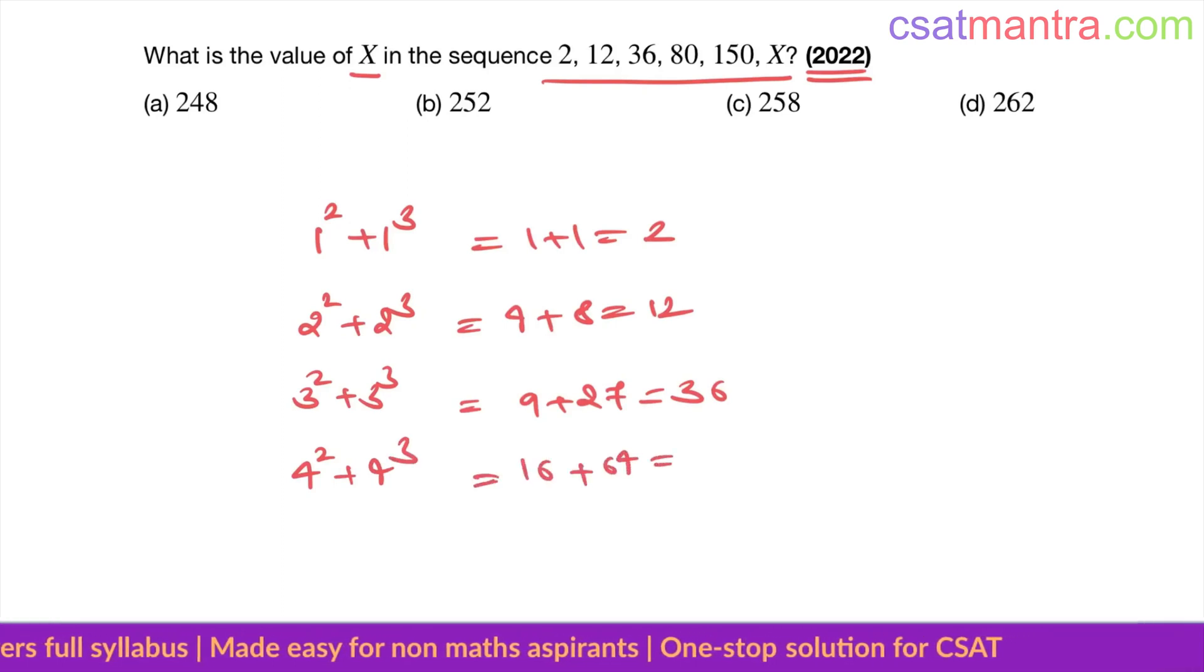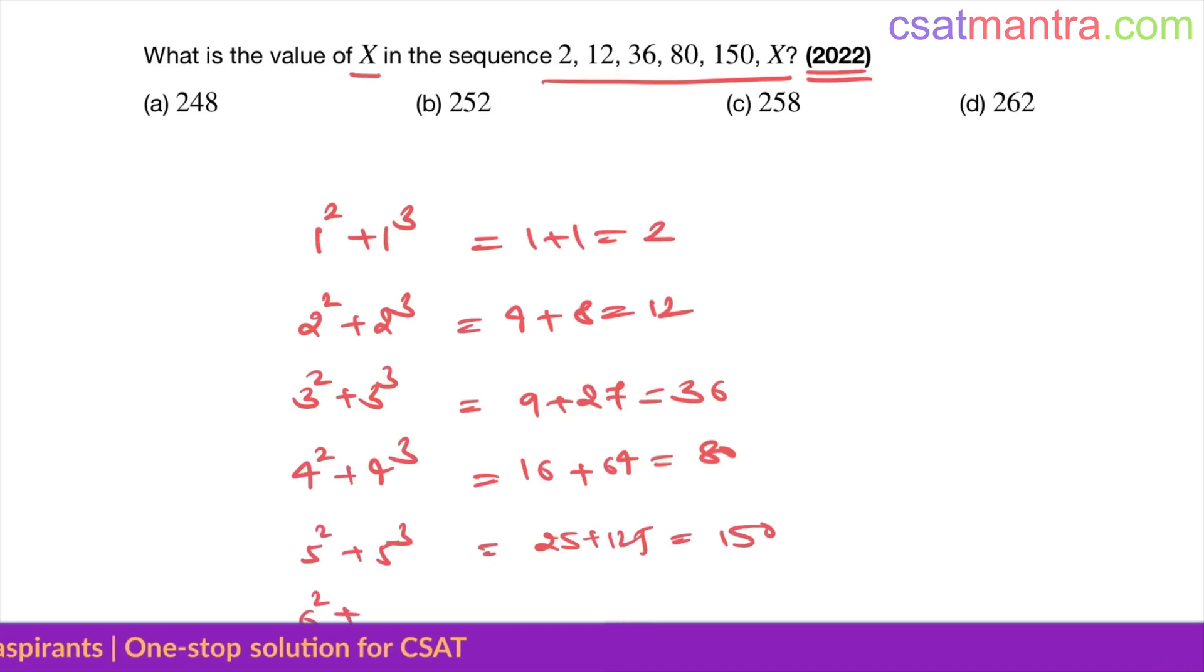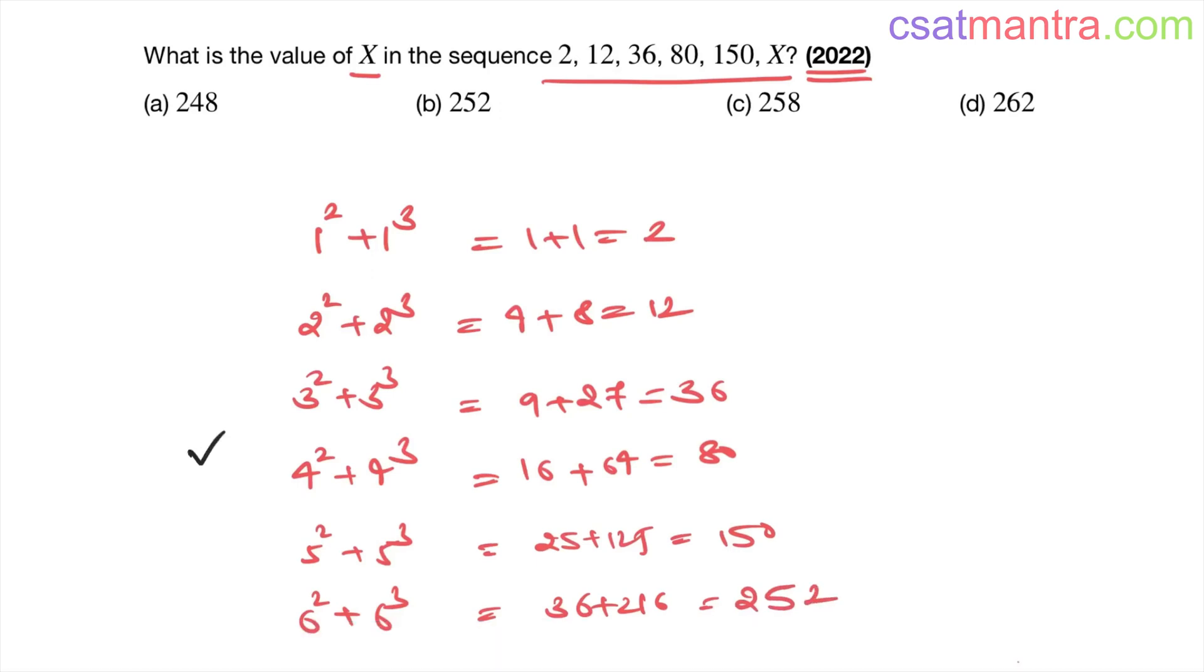5 squared plus 5 cubed, 25 plus 125, equals 150. 6 squared plus 6 cubed, 36 plus 216, equals 252. So how do we arrive at this method? Trial and error comes from practice. I have tried all the other ways and somehow I was able to observe this.